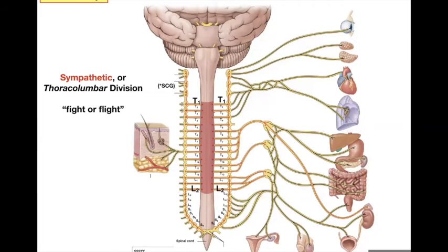Those receptors are all embedded within the tissue so that they could have their particular effect: increase heart rate, decrease salivation, increase heart rate, increase airway breathing, increase glucagon secretion.